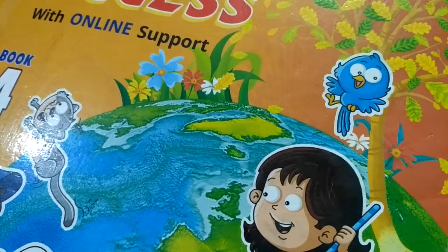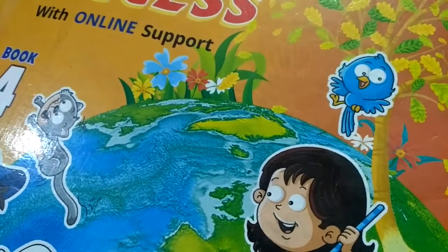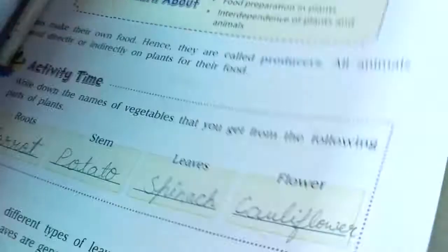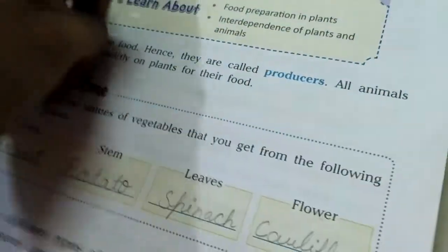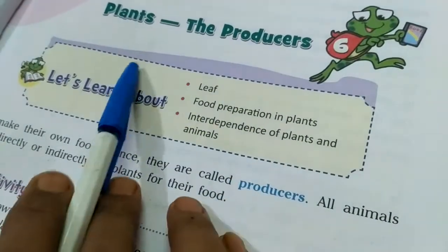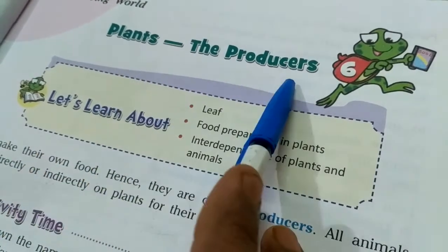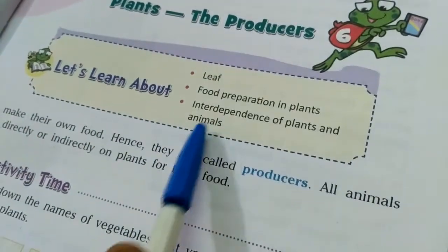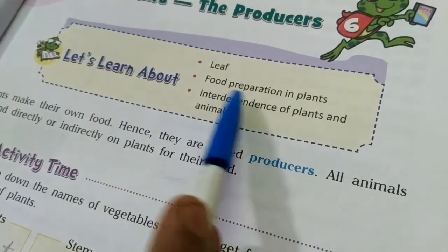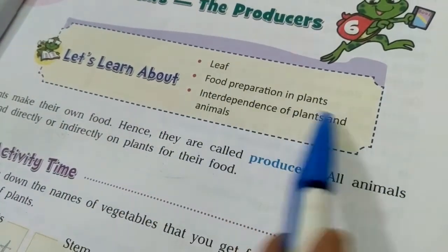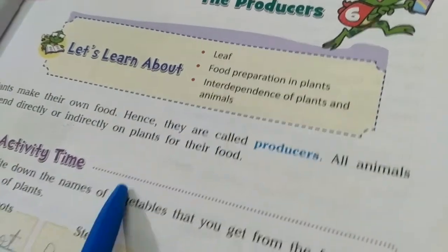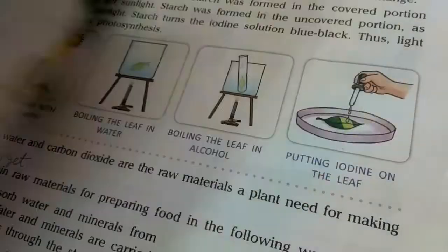Hello and welcome kids once again to your science class of grade 4. In this part of the video I am going to revise chapter number 6 of your science course book. The name of the chapter is 'Plants the Producers,' in which we have already studied about leaf, food preparation in plants, and interdependence of plants and animals. I am going to revise the keywords, book exercises, as well as the question and answers of this chapter.